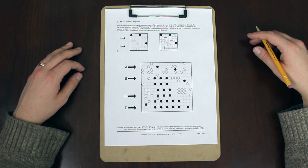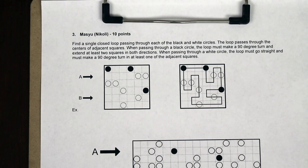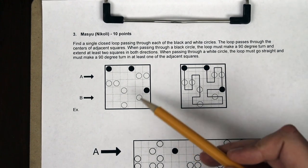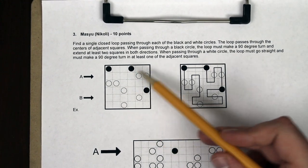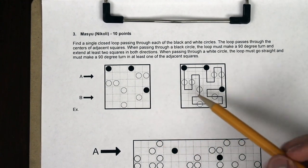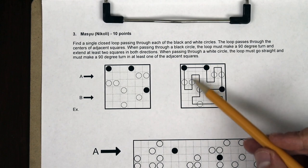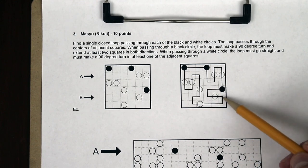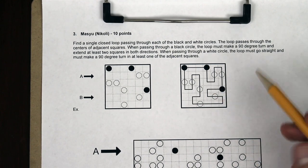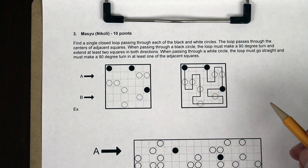Let's take a look at the rules. A Masu puzzle is an example of a loop-type puzzle. So you're starting with something that looks like the board to the left here, and you're drawing a loop that goes through every single one of these circles — just a single closed loop.